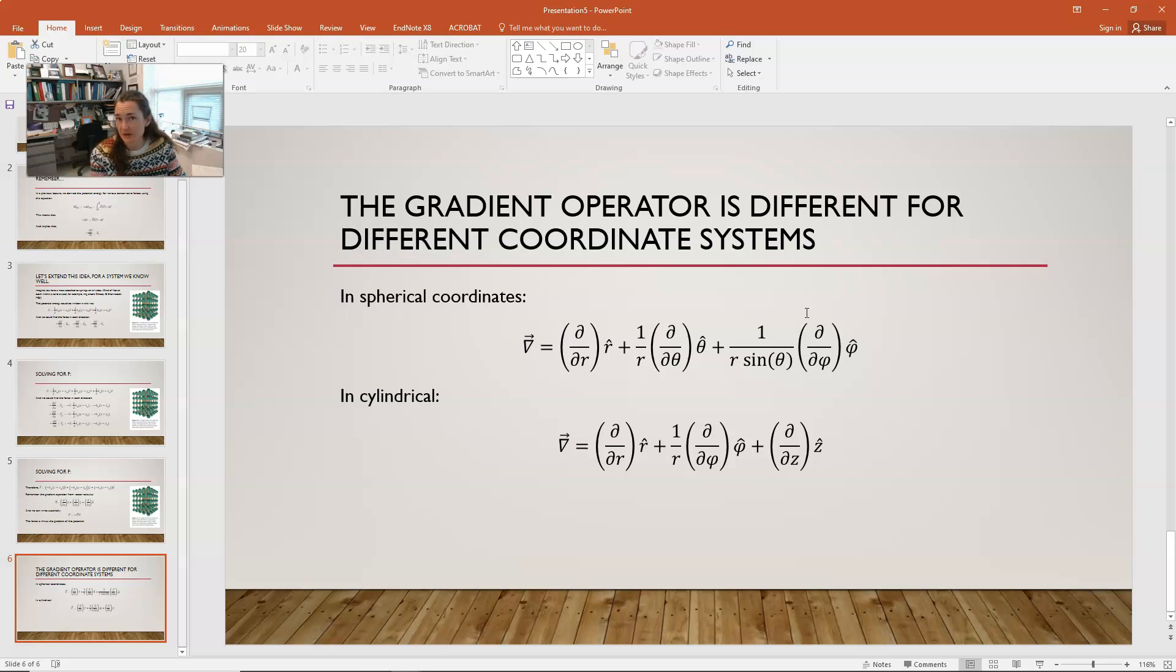A lot of my students in the past, on tests especially, when they're freaking out, have written, like, partial with respect to r, r hat, plus partial with respect to theta, theta hat, plus partial with respect to phi, phi hat. And it's not right. The units don't work out, for one thing. So, just remember that when you switch over to other coordinate systems, your gradient operator is different.